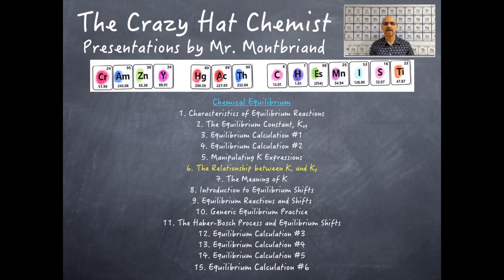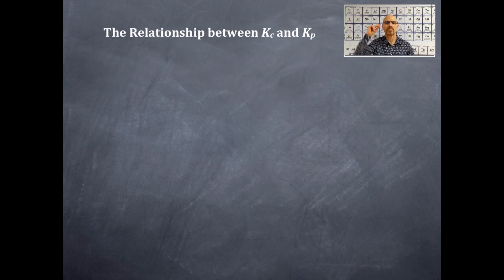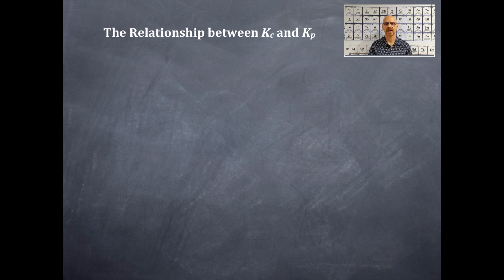Welcome to the Crazy Hat Chemist. So another video here on equilibrium. Today we're talking about the relationship between Kc and Kp. Kc is for concentration, and those are things in solution. Kp is for pressure, and those are going to be gases.